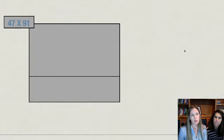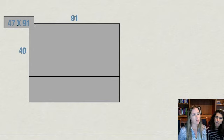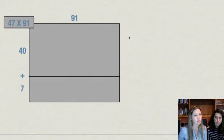So the first step is to plop our bigger number up on the top. So 91 is on the top. And then our other number 47, we're going to expand into 40 plus seven. So now we just need to go through again, like we did before, and find the area of each of these little rectangles. So this one is 91 times 40.